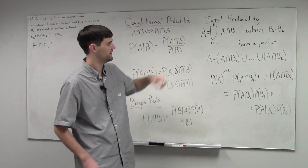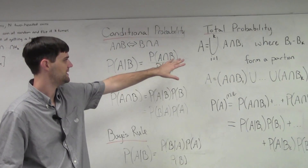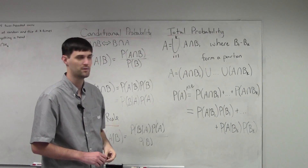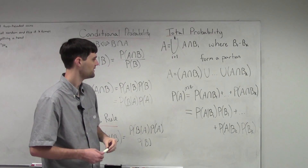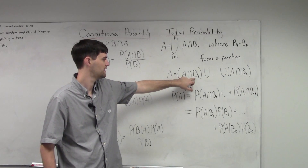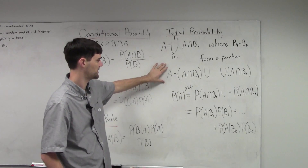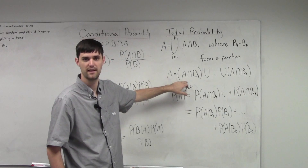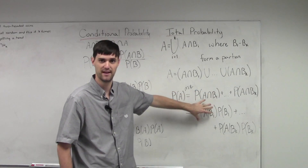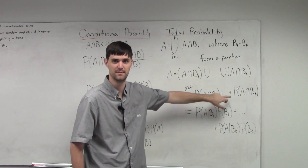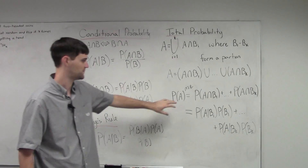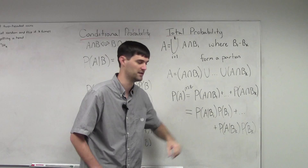We use that later on and we have total probability. Here we're assuming that there's a collection of events B sub i that form a partition of our sample space. We can intersect our event A with the individual B sub i's. Once you take the union of these events, they're mutually exclusive. We can take the probability of A and express it using the definition of conditional probability to write each intersection as a conditional probability times the probability of the conditioning event.